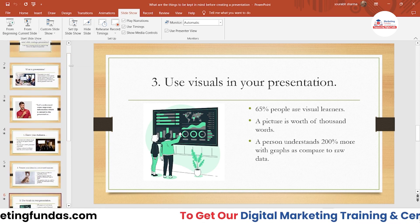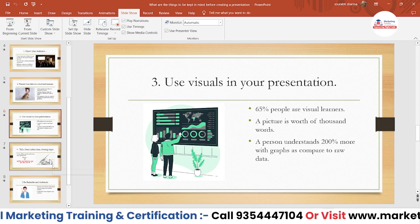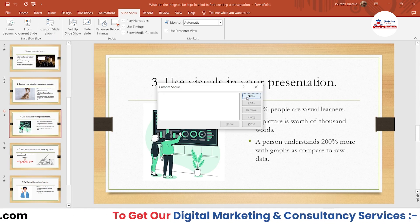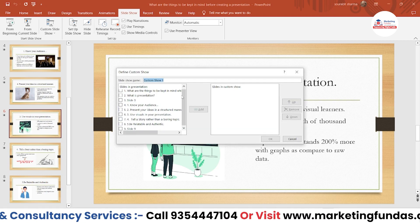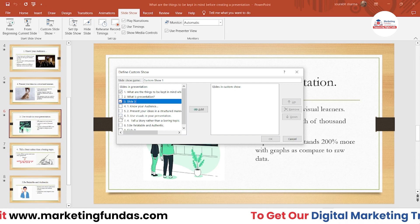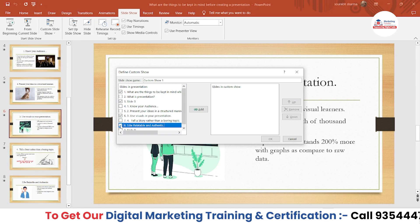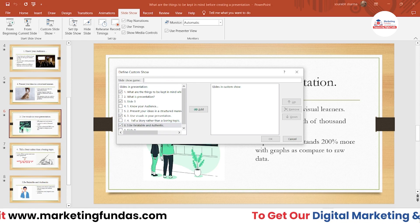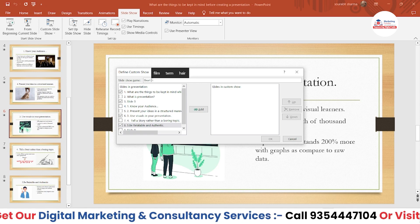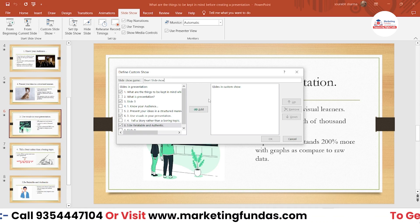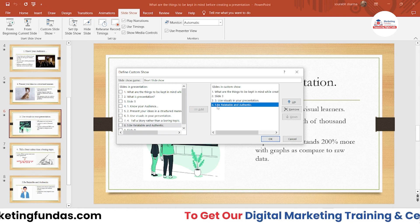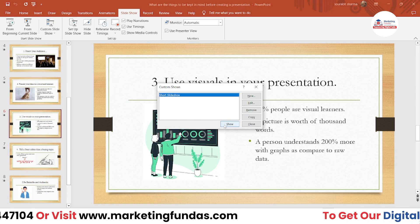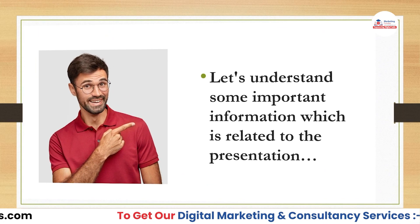If you want to select only a few slides to show someone — say slides one, three, six, and eight — you can create that with the Custom Slideshow option. Click 'Custom Slideshow,' then 'New,' and all nine slides appear. Select slides one, three, six, and eight, then add a name like 'Short Slideshow.' Click the Add button and this slideshow is saved. Click OK, then click 'Show' and it will run with only those selected slides.